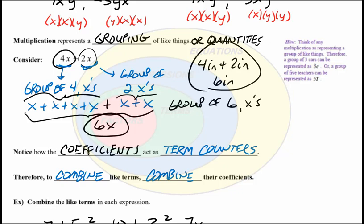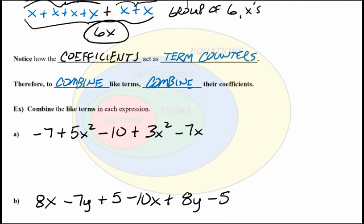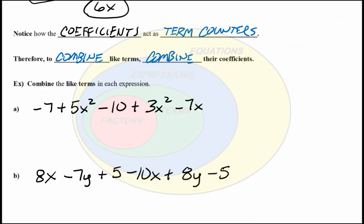So to combine like terms, we just combine their coefficients. So again, we have to, when we see an expression with a bunch of terms in it, again, we have to see it as basically just separate terms.